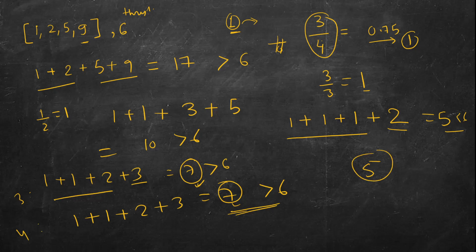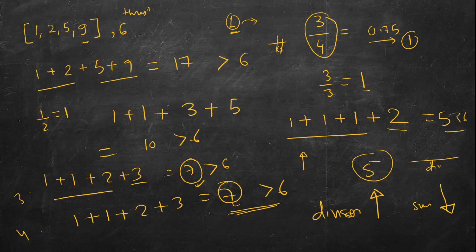If we increase the divisor, the sum decreases because the divisor is in the denominator. We want the smallest divisor. Theoretically, the upper limit is the maximum element — here 9 — because anything beyond that, all values will be less than 1 and rounded up to 1. So we need to search from 1 to the maximum element.